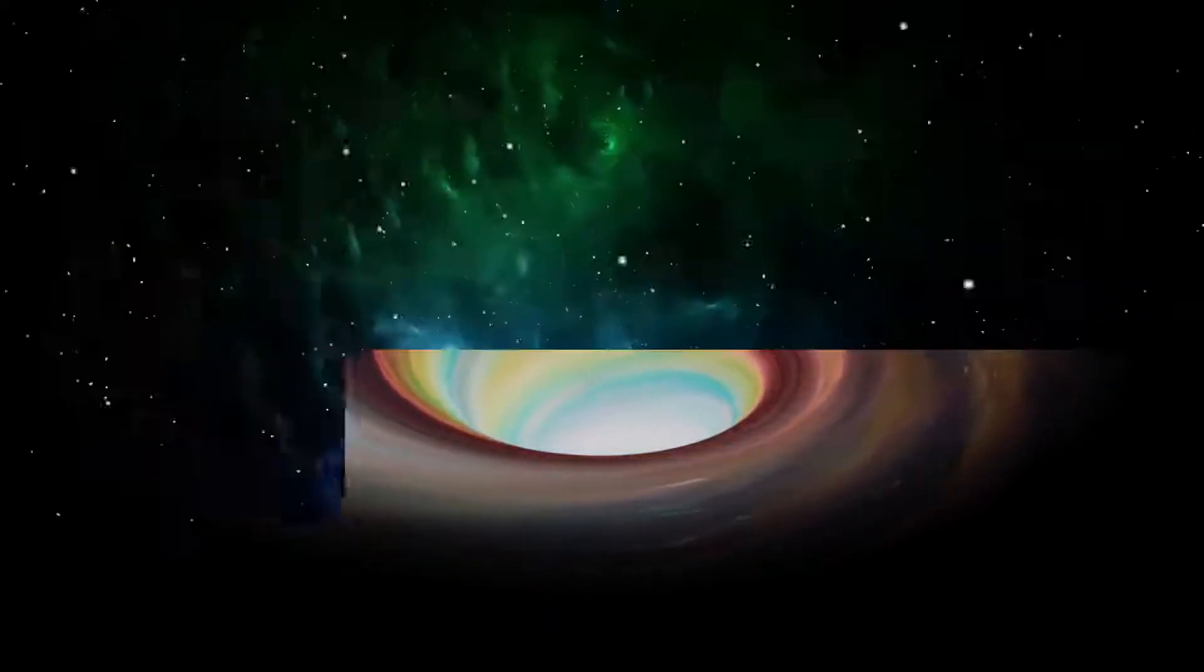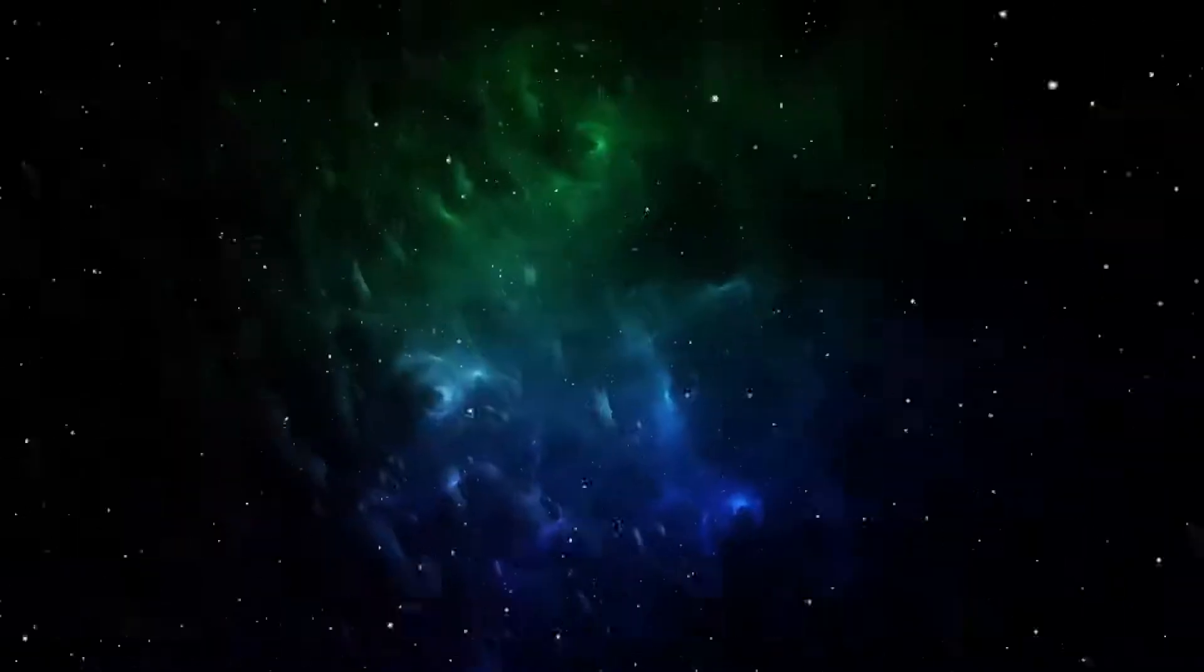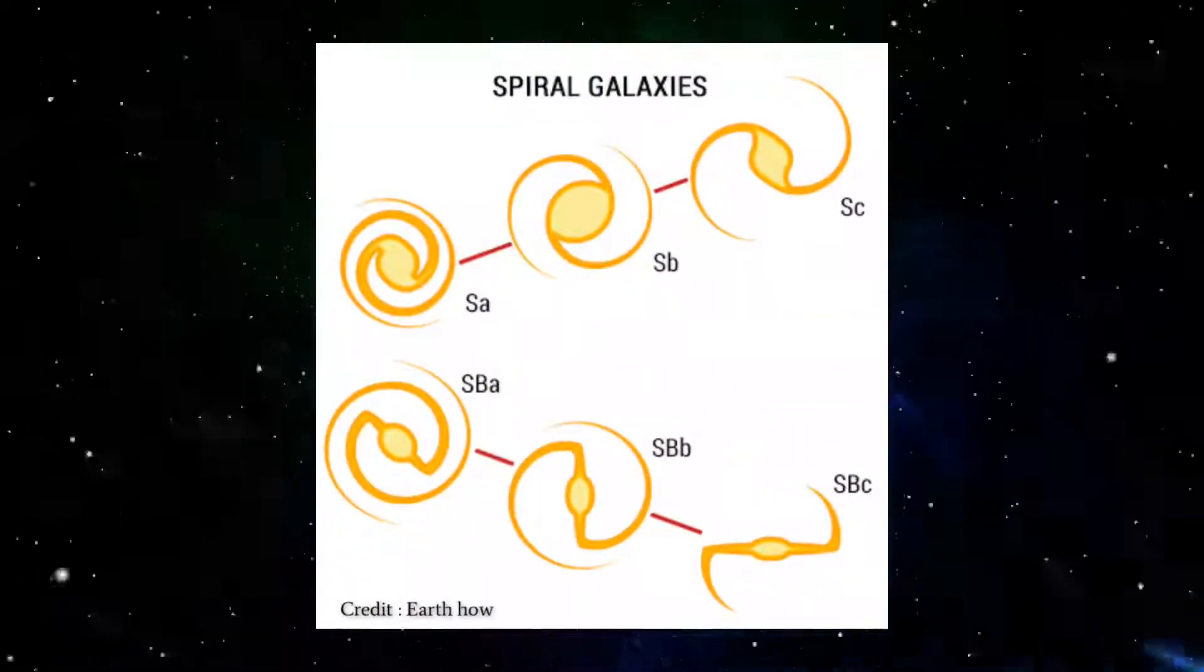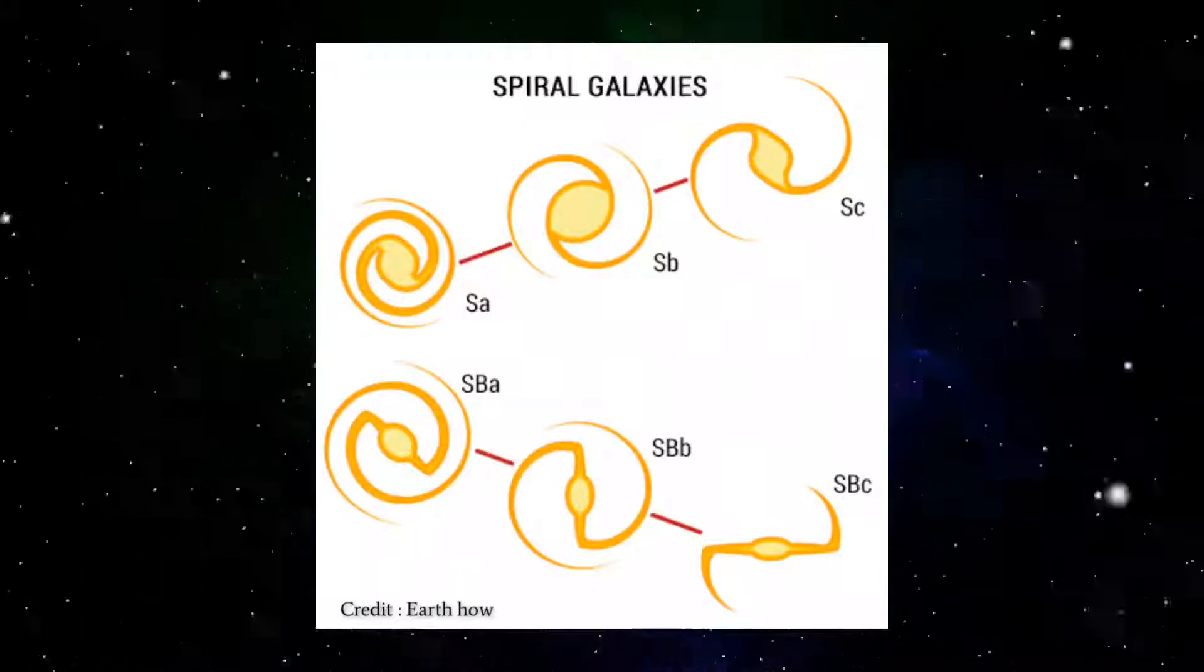Hubble classified spiral and barred spiral galaxies further according to the size of their central bulge and the texture of their arms.